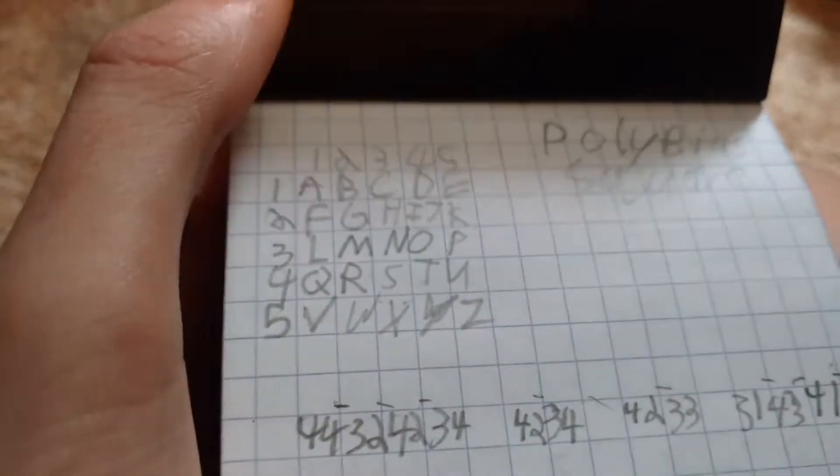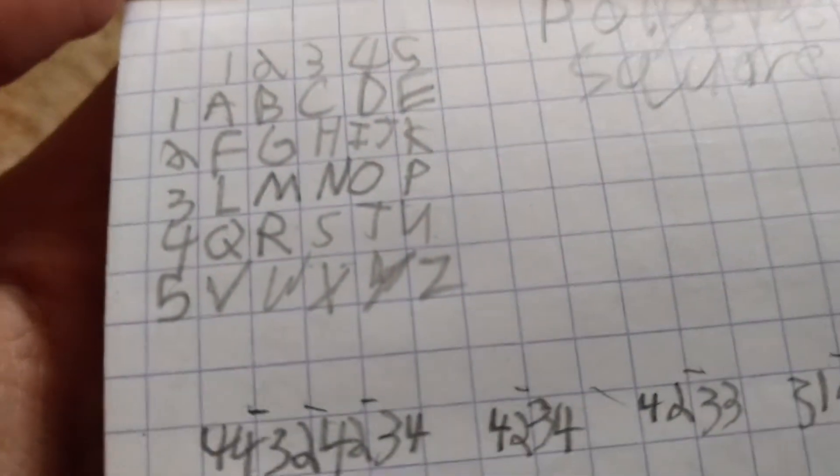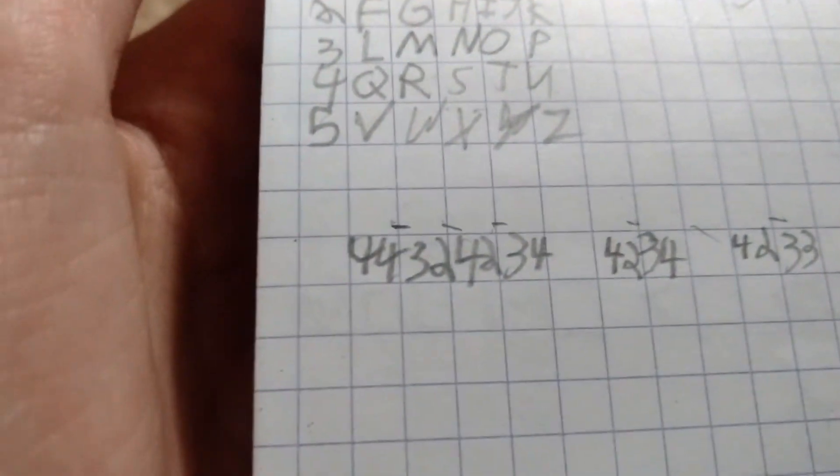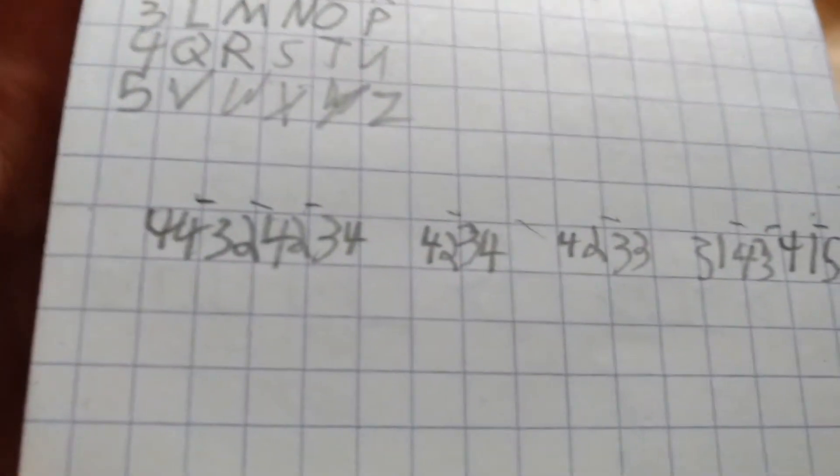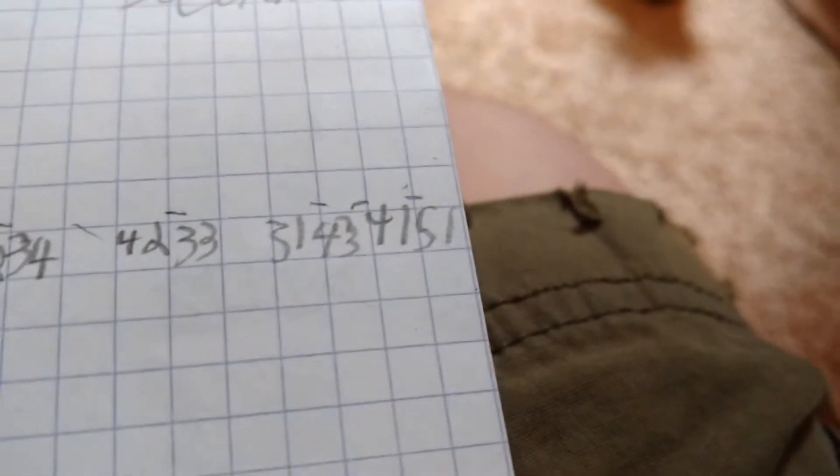So, Polybius square, really kind of not-so-simple-simple. Each grid space goes to something, so 4 and 4 would go to T, so 44 is T, 32 is H, 42 is I, so this is in code. That's what that is.